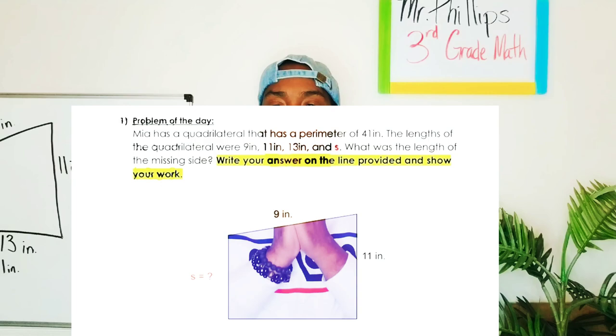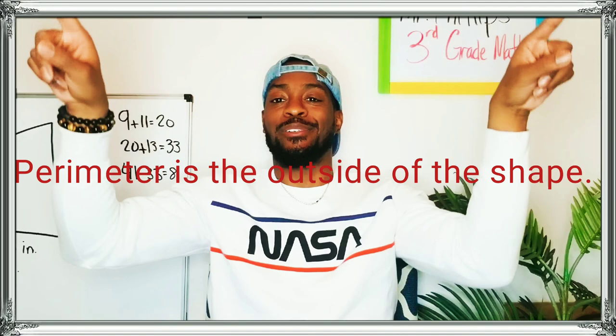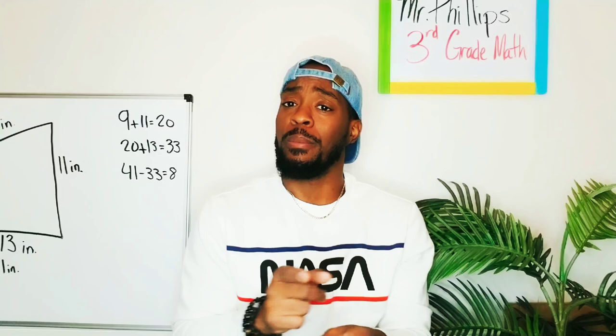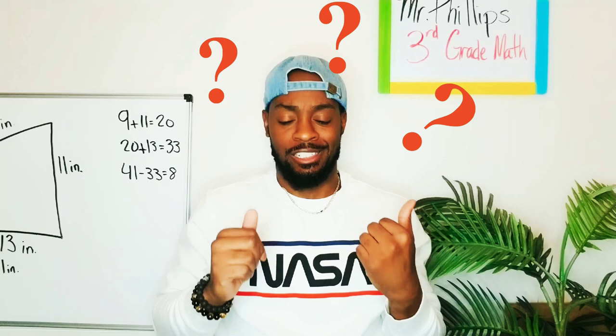Perimeter. I know that perimeter is the outside of the shape, so that's what we're trying to find today. They gave us the perimeter in this problem, but there's a missing side. Let's see what our friend did to find the missing side.